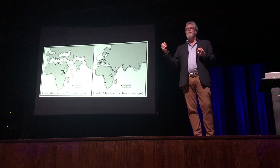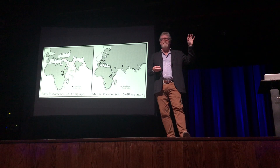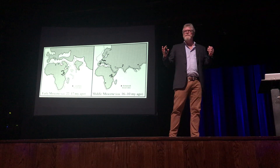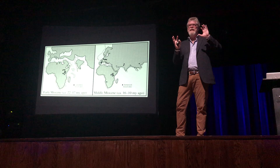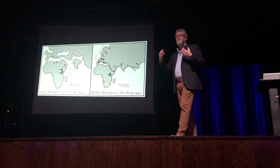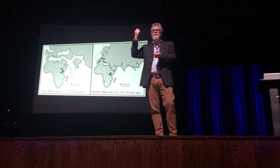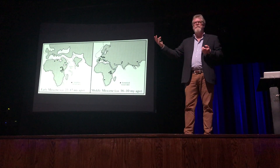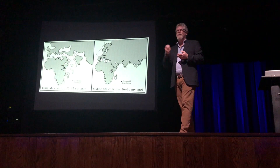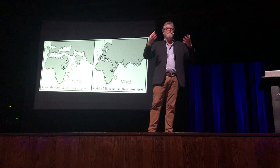We now know that apes first appear in the fossil record in Africa about 23 million years ago. The genus Proconsul, our oldest African ancestor, was first found in Africa 23 million years ago, when Africa was actually disconnected from the rest of the world's land masses. Due to plate tectonics, Africa crunches into the Arabian Peninsula and Asia around 18 million years ago — the first African exodus. The descendants that left evolved into the gibbons and orangutans. The ones that stayed in Africa ultimately became the chimps, gorillas, and us.